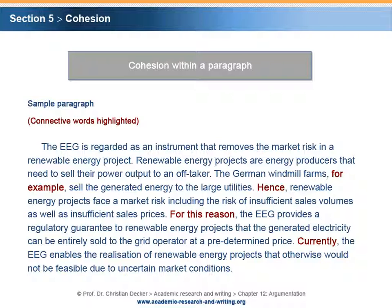This is how the final paragraph would look. As mentioned in the section on characteristics of a paragraph, connective and transitional wording should support the logical flow within a paragraph in order to provide cohesion. The connective words are highlighted — for example, 'hence,' 'for this reason,' and 'currently.'